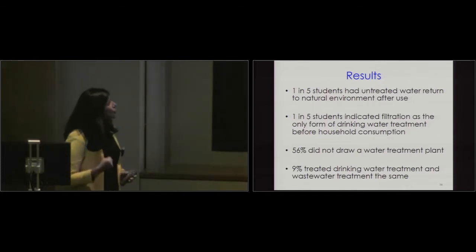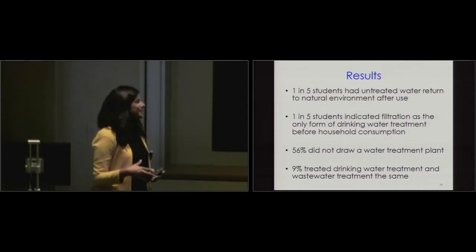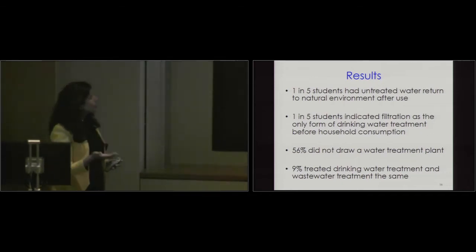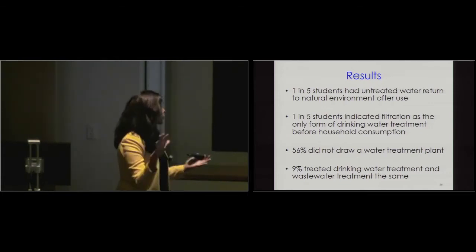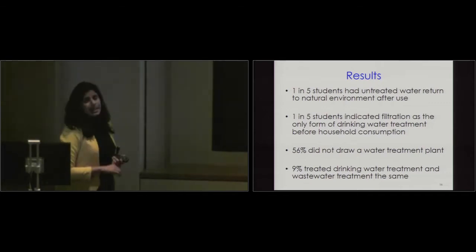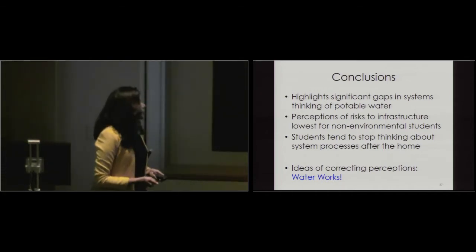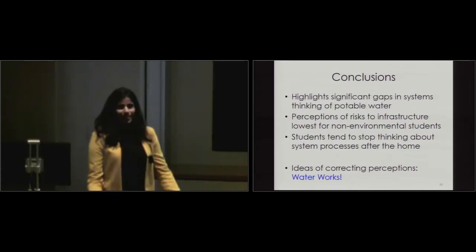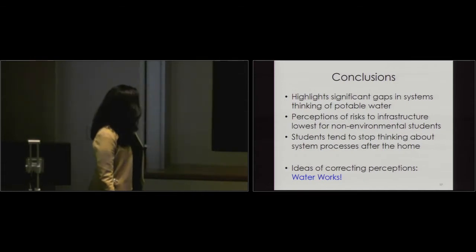So in terms of results, one in five students had untreated water returning to the natural environment after use. So untreated. You guys have the image, right? Okay, just making sure. One in five students indicated filtration as the only form of drinking water treatment before household use. So basically what that means is, water comes from the surface or groundwater, I just filter it and then I drink it. Okay, no chemical treatment. 56% did not draw any water treatment plant. 9% treated drinking water treatment and wastewater treatment the same. So those are pretty surprising findings, and this also highlights significant gaps in the way we think about the entire water system. Perceptions of risk to infrastructure are lowest for non-environmental students, and students tend to stop thinking about the system processes after the home.